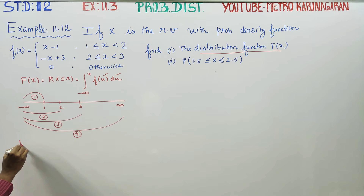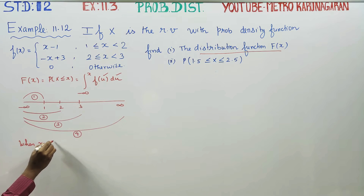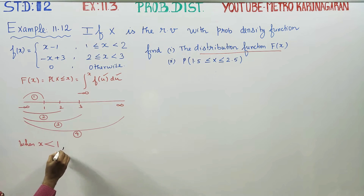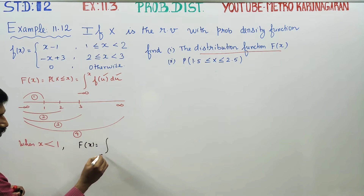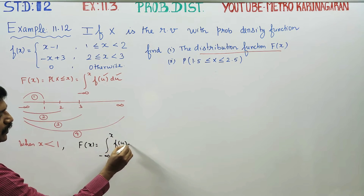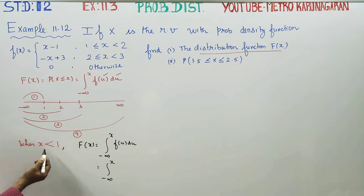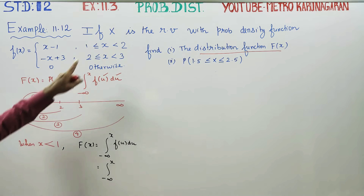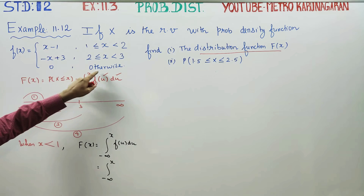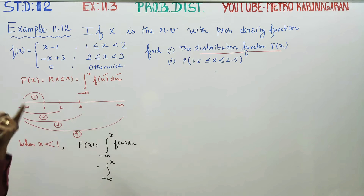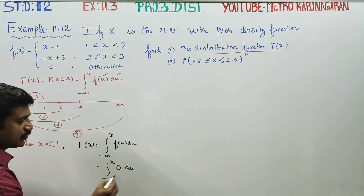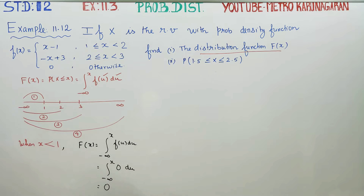First interval: when x is less than 1. The distribution function F of X equals the integration from minus infinity to X of f(u) du. In this interval, f(u) is 0, so we are integrating 0 du. That answer is 0. Sum number 1 is complete.